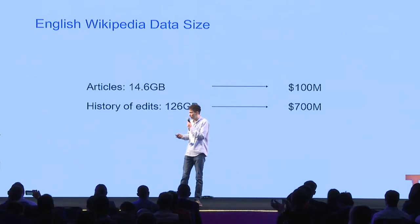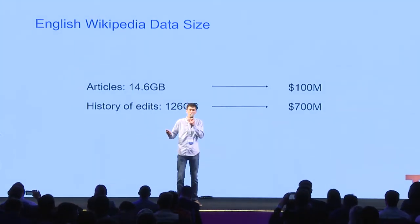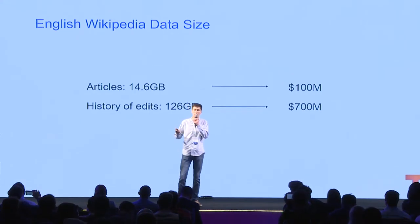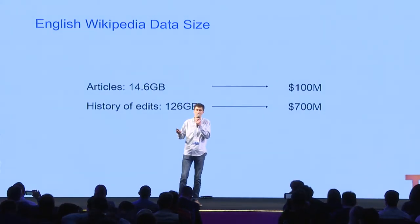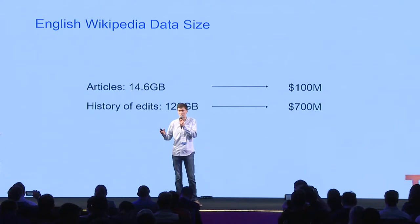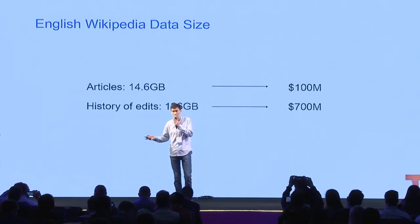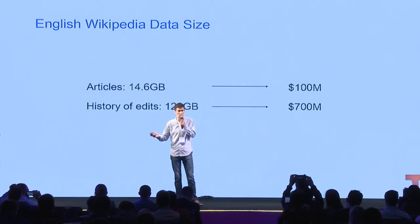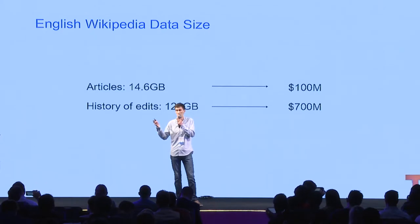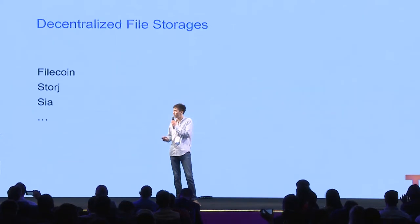Imagine we want to create a decentralized Wikipedia — a public knowledge base free from any censorship or governments. English Wikipedia compressed takes about 15 gigabytes of data, and to upload it to a blockchain would cost 100 million dollars. If you add the history of edits, it would be 700 million. Add other languages, and it's even more.